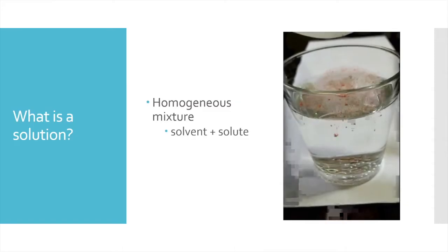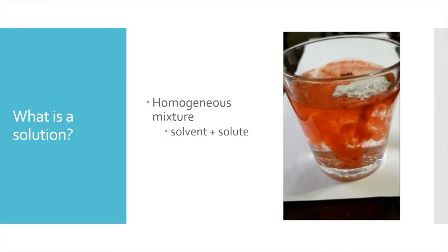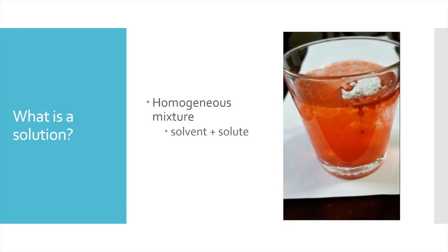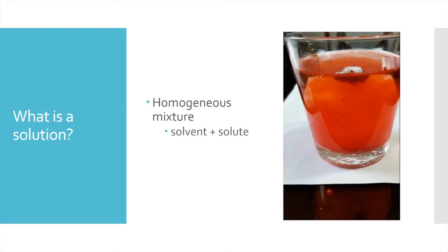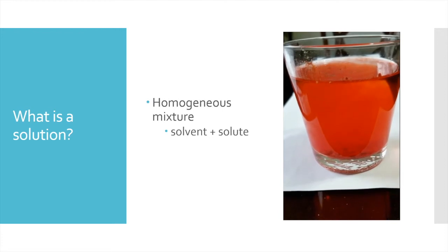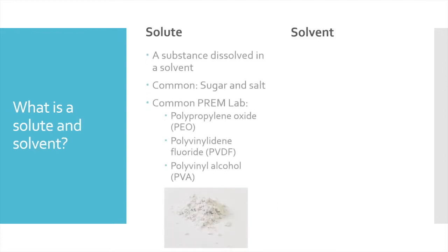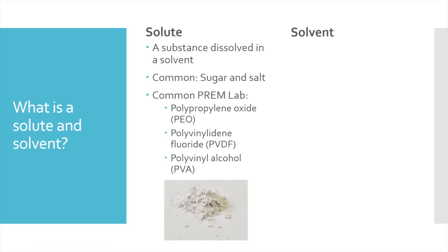Let's start with the basics. A solution is a homogeneous mixture produced by the integration of two or more components. These components are generally described as a solute and solvent. A solute is a substance dissolved in a solvent. Common household solutes would be sugar and table salt. In our nano labs, the most common polymers for fiber production used are PEO, PVA, and PVDF.